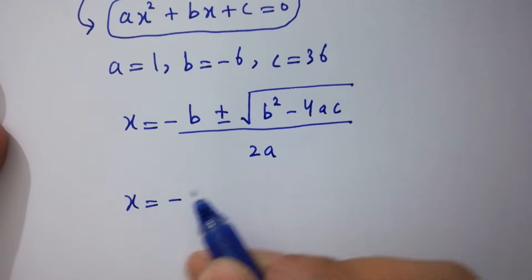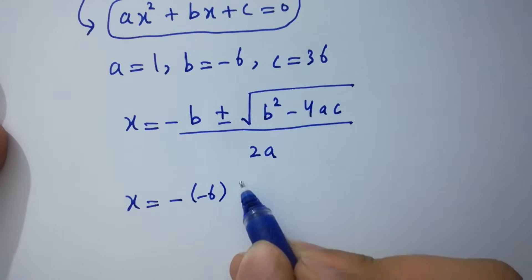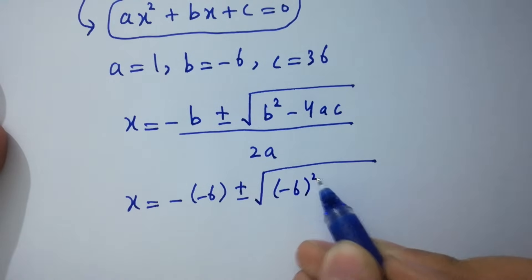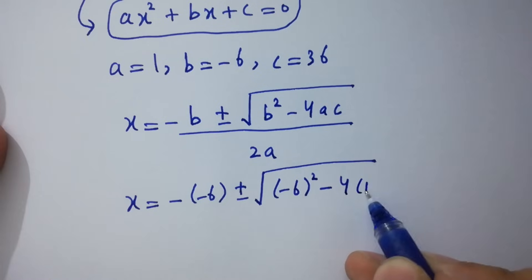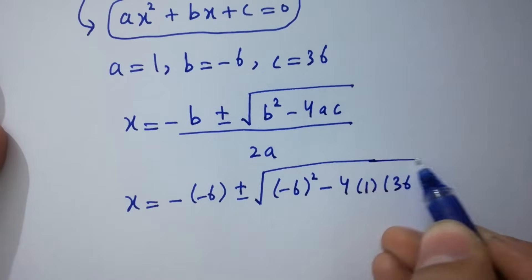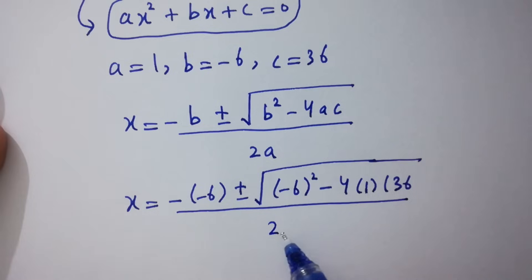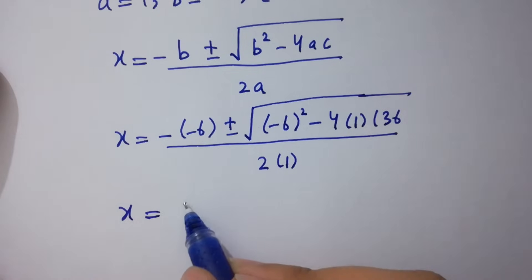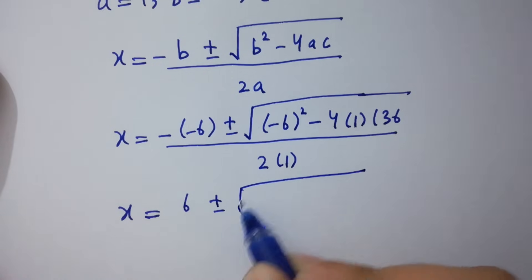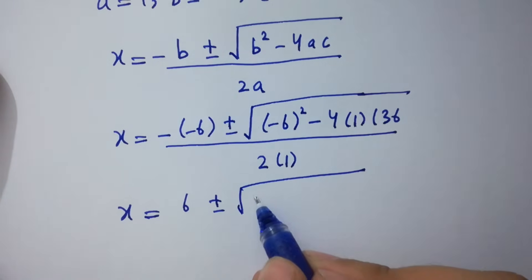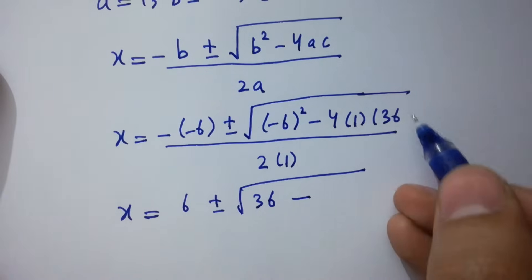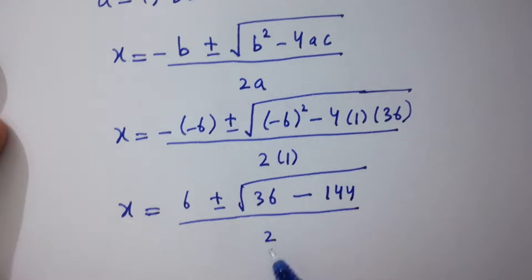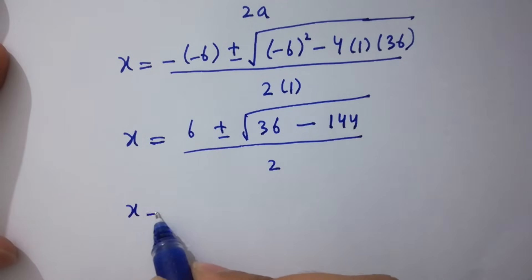Substituting the values: x equals 6 plus or minus the square root of (negative 6) squared minus 4 times 1 times 36, all over 2 times 1. That gives x equals 6 plus or minus the square root of 36 minus 144, over 2.